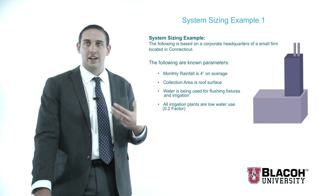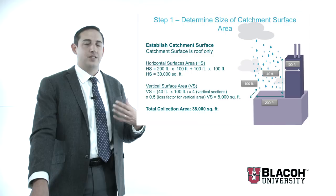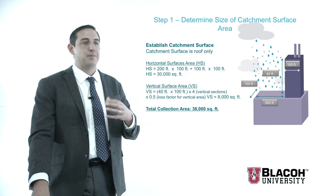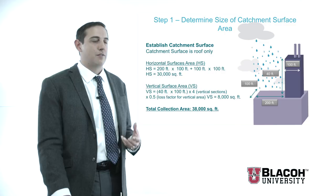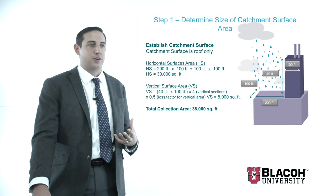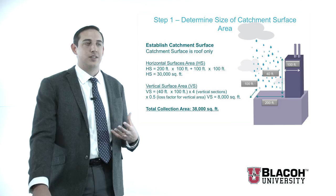The first thing you want to do is size your catchment surface. In this case, the catchment surface is roof only. The building is about 200 feet wide with a small vertical rise — it's 100 feet deep, that vertical rise is 40 feet, and that top section is about 100 feet square. So the horizontal surface areas are 200 ft × 100 ft for the lower level, and 100 ft × 100 ft for the upper level, giving a horizontal surface area of approximately 30,000 square feet. The vertical surface area is 40 ft × 100 ft times the 50% loss factor, giving about 2,000 square feet of vertical catchment. My total collection area is approximately 32,000 square feet.